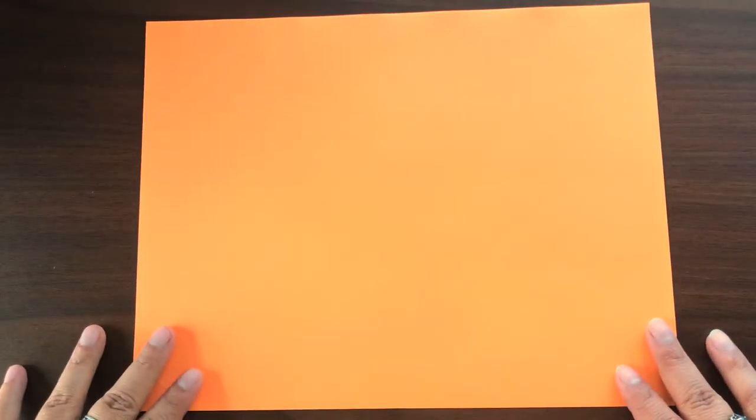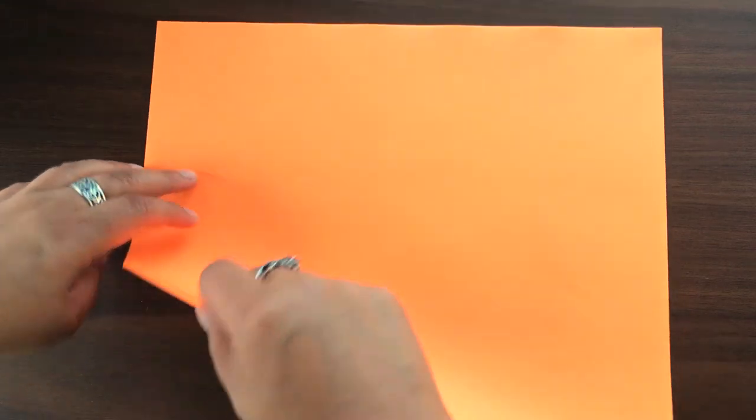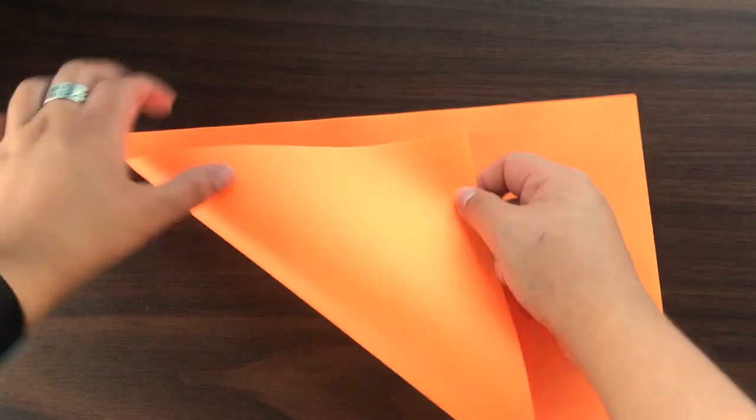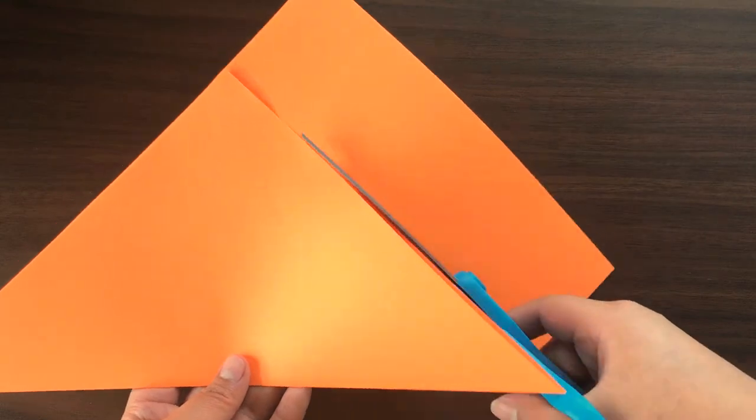To make the square, take one corner and fold it across, lining up the short edge of the paper with a long edge, forming a triangle. Crease it gently, then cut off the excess.